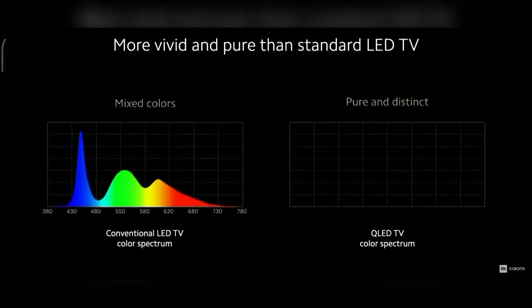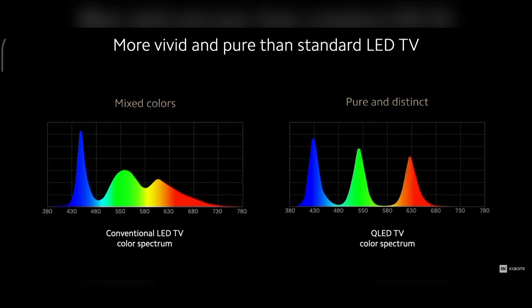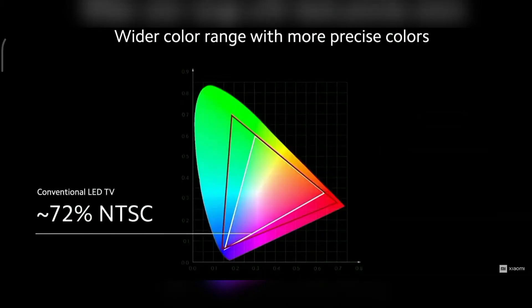Let's check out the quantum difference. With your conventional LED TV, you'll get mixed colors, especially the reds. With a QLED TV, you get pure, distinct colors. The main benefit is that QLED TVs are capable of showing a much wider range of colors. This chart shows all of the colors that the human eye is capable of seeing. The white triangle represents conventional LED TVs — they're capable of showing about 72% of the NTSC, a color format developed specifically for TV.